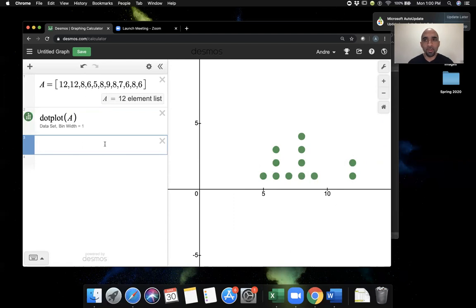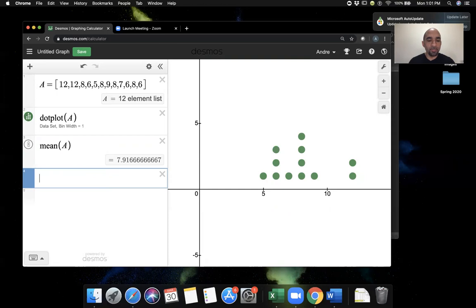Let's proceed to find the other values. To find the mean, I simply do mean of data set A. The mean of this data set is 7.92 rounded. To find the standard deviation, which is a measure of variability, I'll do STDEV and then A. I'm entering list A into this command. The standard deviation is 2.23.